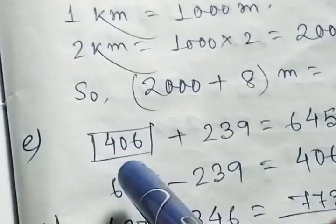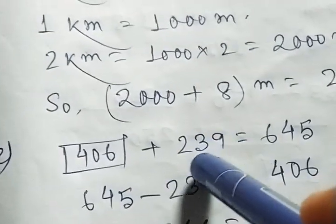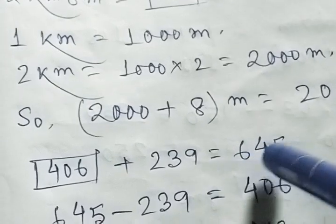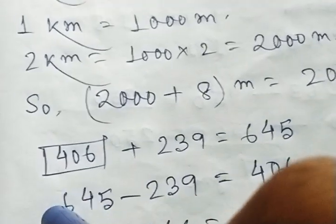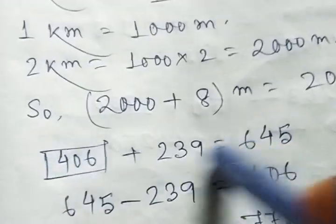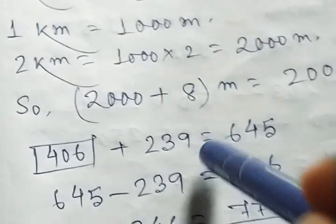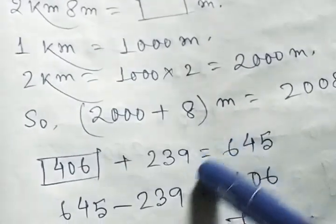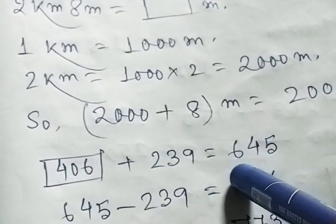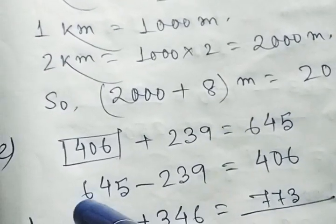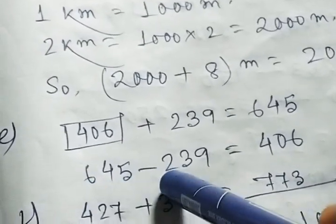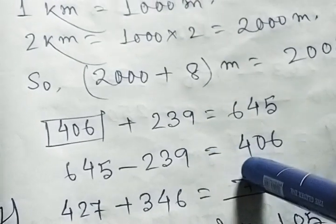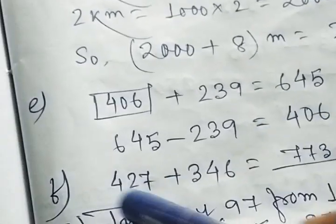Number E, dash plus 239 equals 645. I have done before. In this type of problem, we have to subtract the left side from the right side. Same way, 645 minus 239 equal to 406.